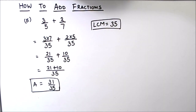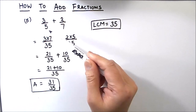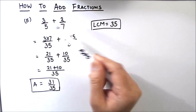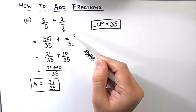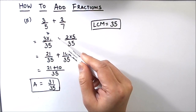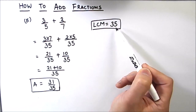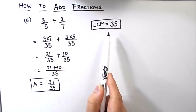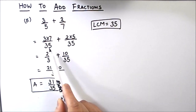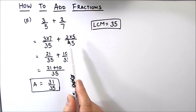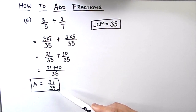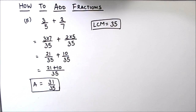Let's take a recap of adding fractions. The first step is to make the denominators of all fractions equal so we can add them directly. For that, we take the LCM of the denominators, use the LCM as the common denominator for all fractions, and then simplify and add. I hope this video is helpful. If you like the video, please hit the like button and subscribe to my channel for more math videos. Thanks for watching.